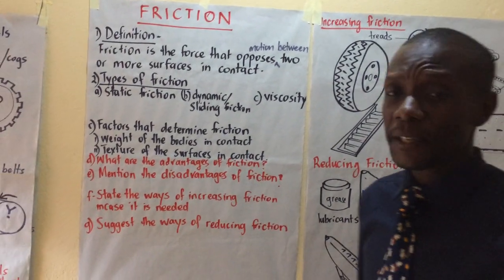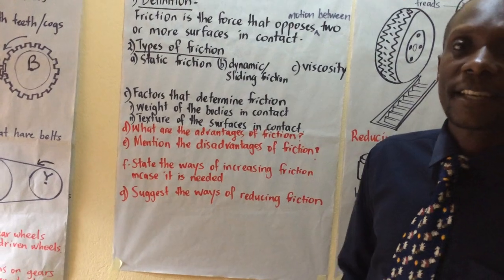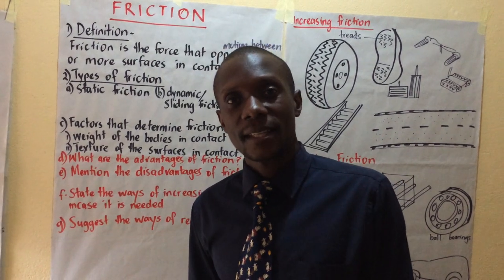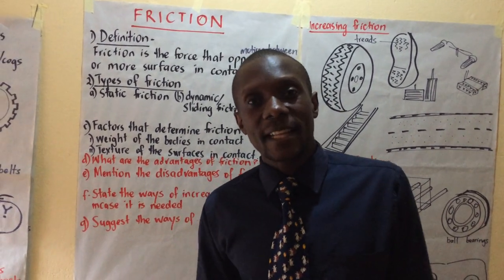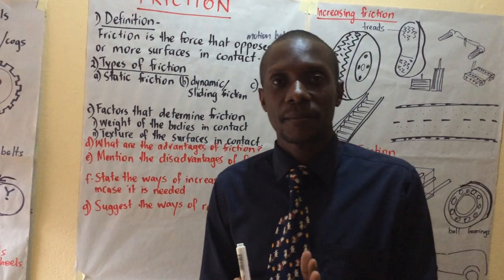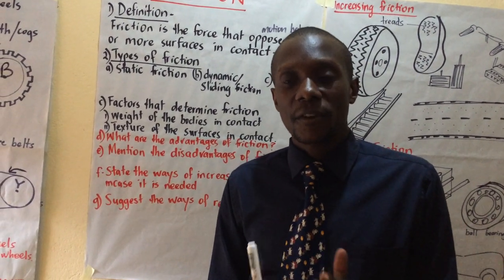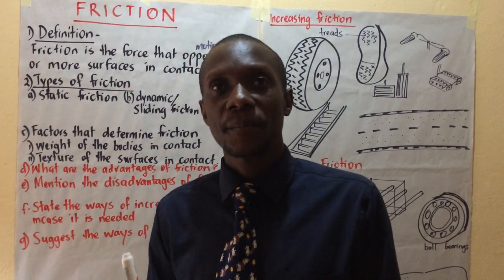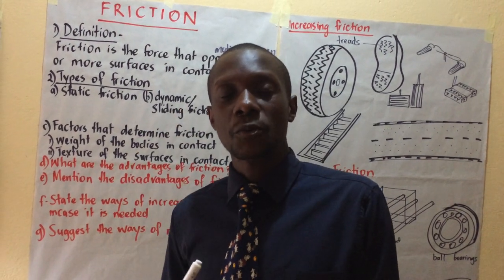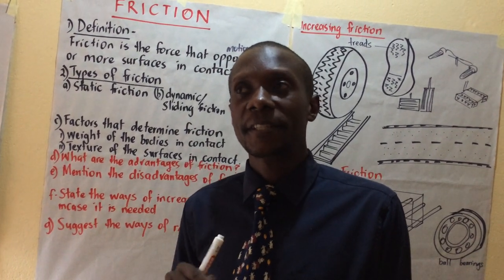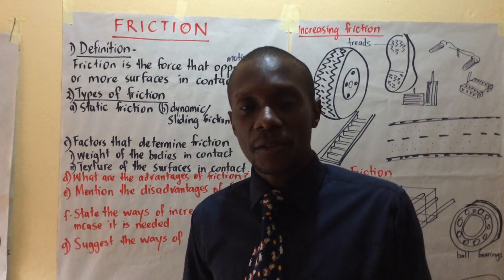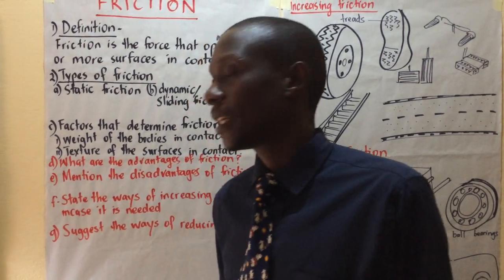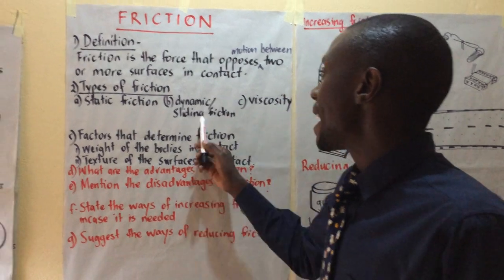The types of friction are: static friction, dynamic friction which is also called sliding friction, and viscosity. Static friction is the type of friction that exists between stationary bodies. For example, a table sitting on the floor where neither is moving — that is static friction. A nail pushed into a wall with a hammer, or a box sitting on the ground — that is static friction.